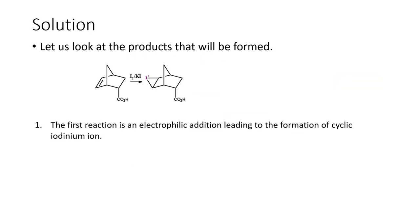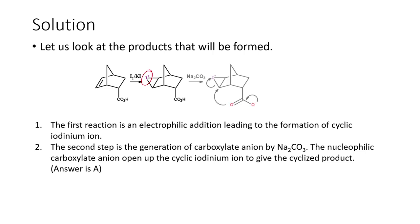The first step is electrophilic addition of iodine, forming the cyclic iodonium ion. The carboxylate anion then attacks a particular carbon and the ring opens. The opening of the ring is the most crucial step. In the final product, iodine is pointing towards the observer, so the attack must happen from the bottom side.